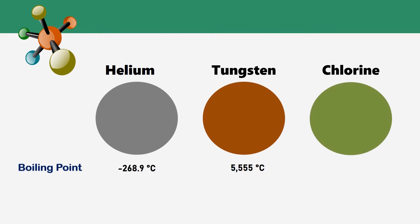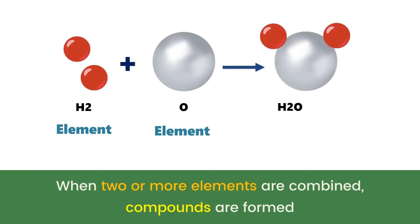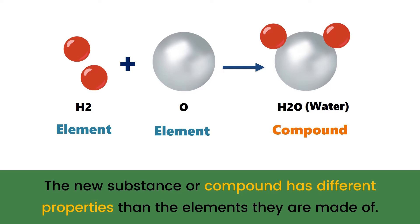When two elements are combined, they form a compound. For example, two atoms of hydrogen which are element, bonded with one atom of oxygen which is another element. Hydrogen monoxide or H2O is formed. It is commonly known as water. Water is a compound.